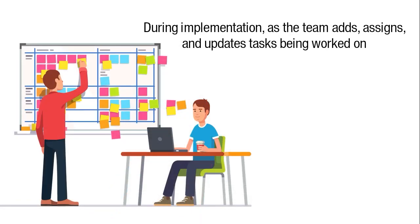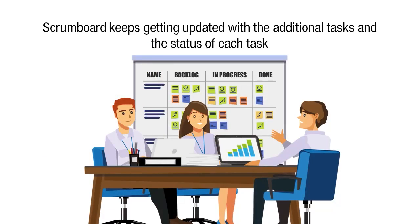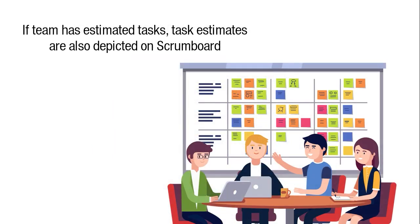During implementation, as the team adds, assigns, and updates tasks, the scrum board keeps getting updated with additional tasks and the status of each task. If the team has estimated the tasks, the task estimates are also depicted on the scrum board.